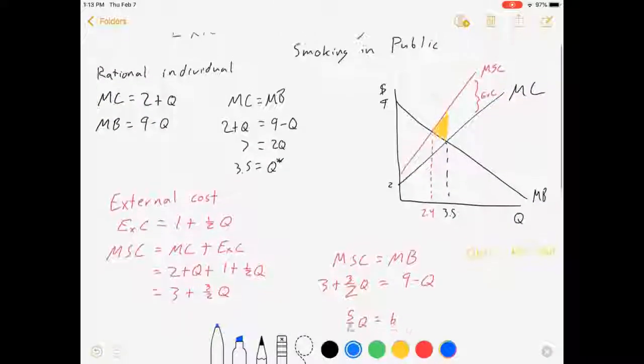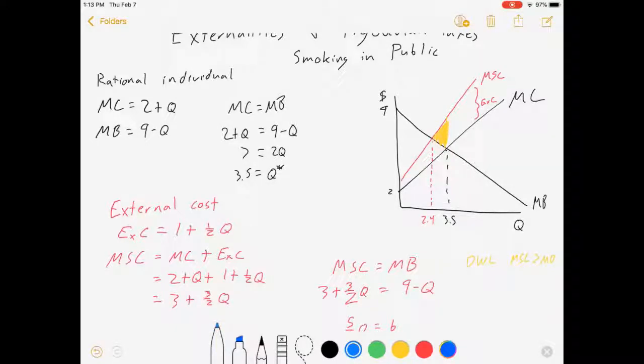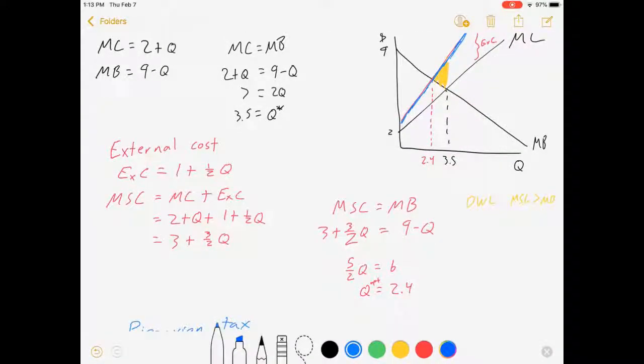What does that do? It makes it so that the person who is smoking starts to internalize that cost. They have to pay the tax, so now they will factor that cost into their decision making. When they do, it'll lead them to this point.